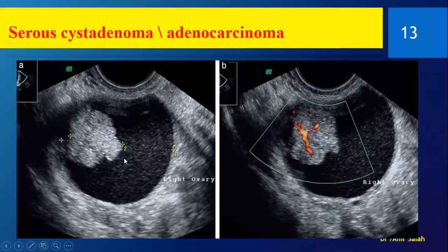Here we see a soft tissue nodule inside the lesion. We have verified it as a nodule with a cystic part and confirmed it as a tumor by vascular flow inside. We would suggest this is likely to be serous, as the soft tissue component is more evident here.